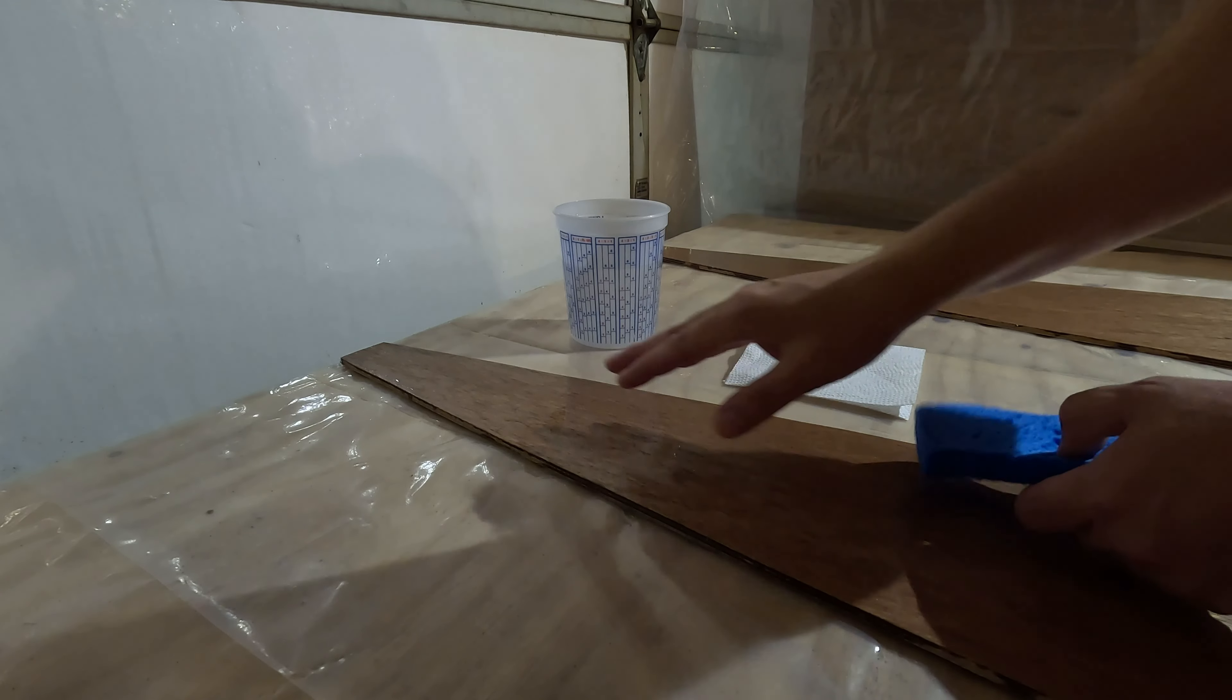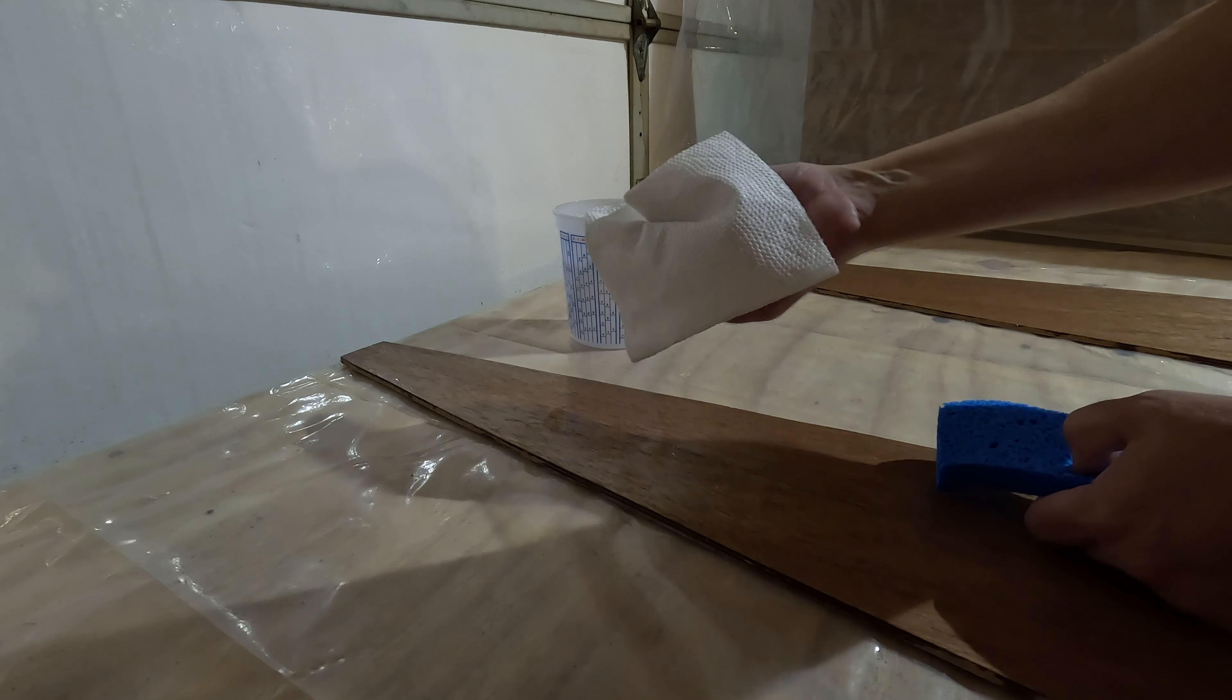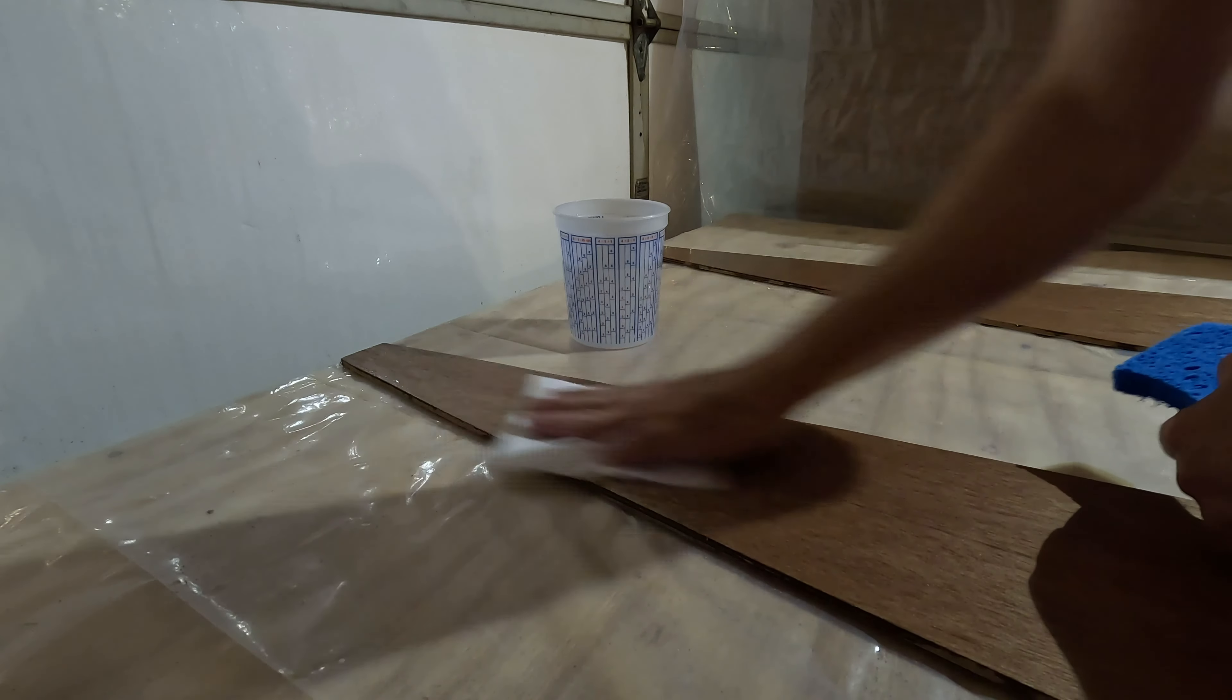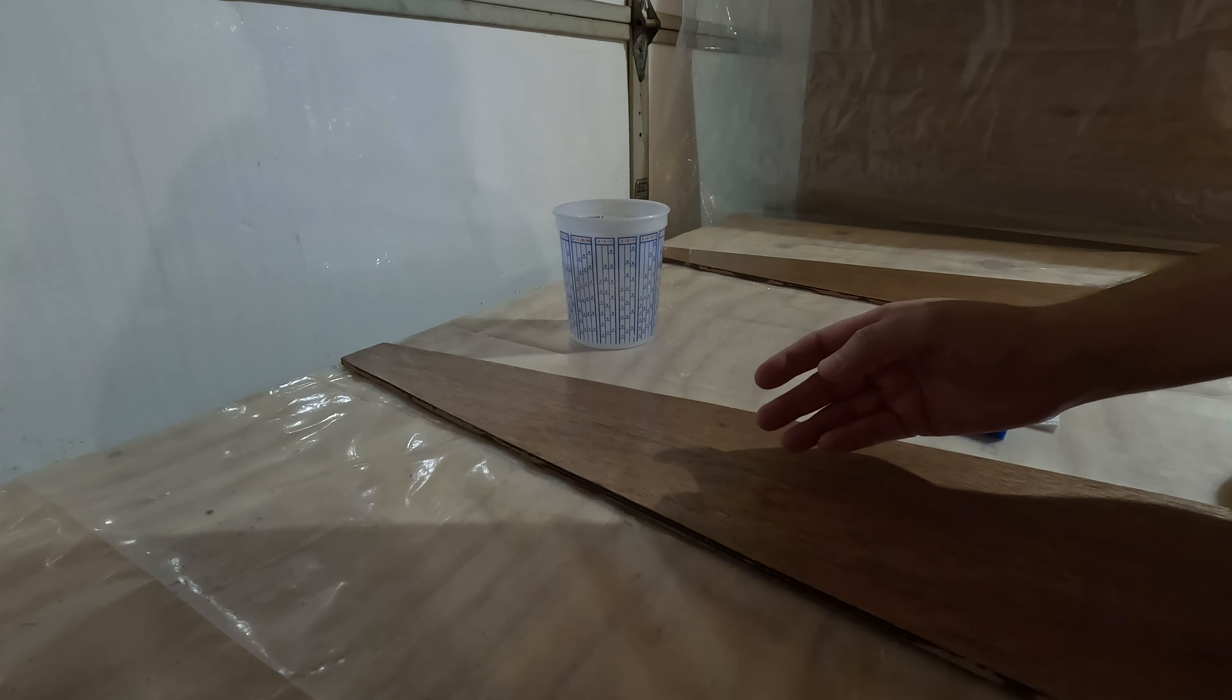So after you do the scrubbing, don't let this water dry, take a clean paper towel and dry it off. And that will actually remove the residue, the amine blush from there. And once that's done and it's cleared up, then the next step would be to sand this and put more epoxy or put fiberglass or whatever you want.